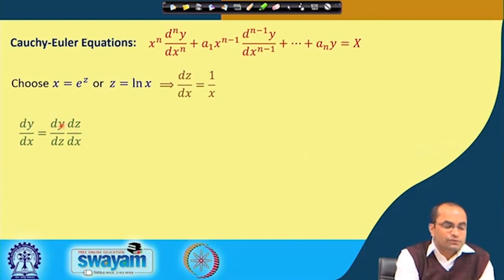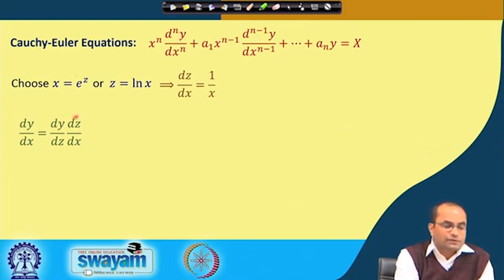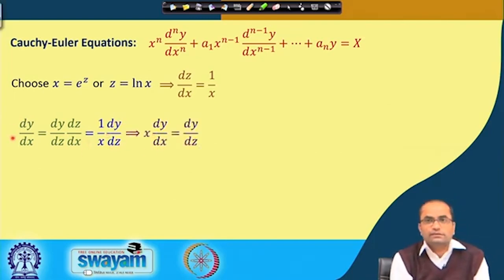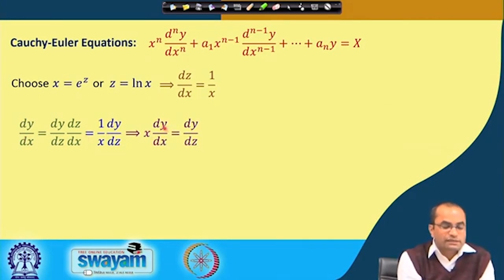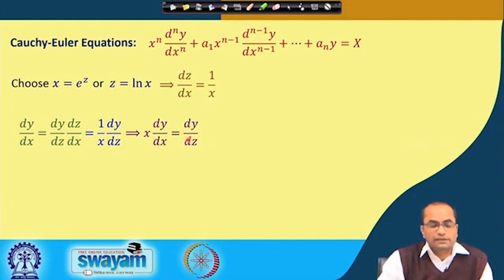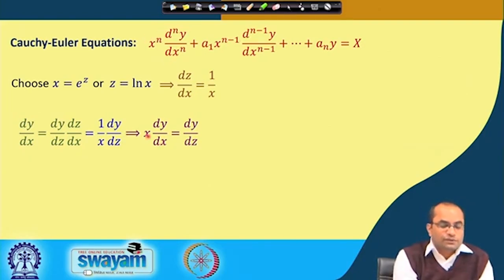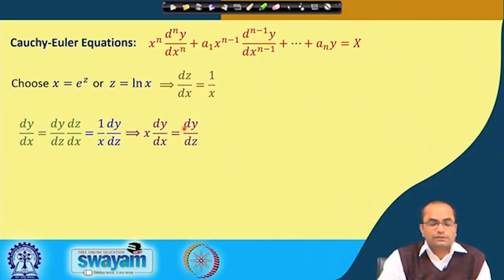By the chain rule, dy/dx = (dy/dz)·(dz/dx). We have dy/dz and dz/dx = 1/x, so we can replace dz/dx by 1/x, giving us (1/x)·(dy/dz). If we multiply x to the whole equation, we get x·(dy/dx) = dy/dz. This is precisely the key point, because in our equation the (n-1)th order derivative comes with x^(n-1), and the nth order derivative comes with x^n. So with the first order derivative, x·(dy/dx) = dy/dz.